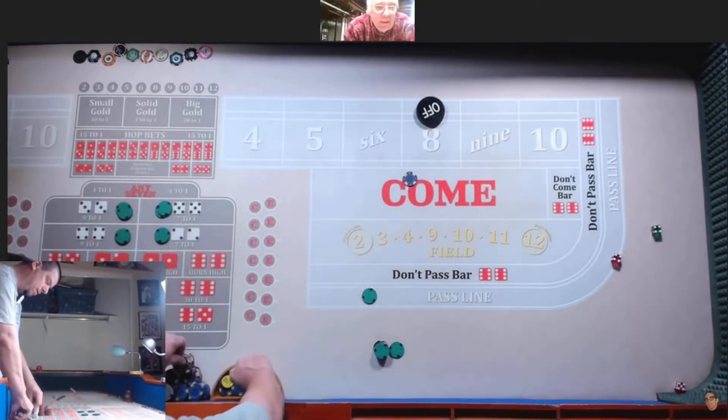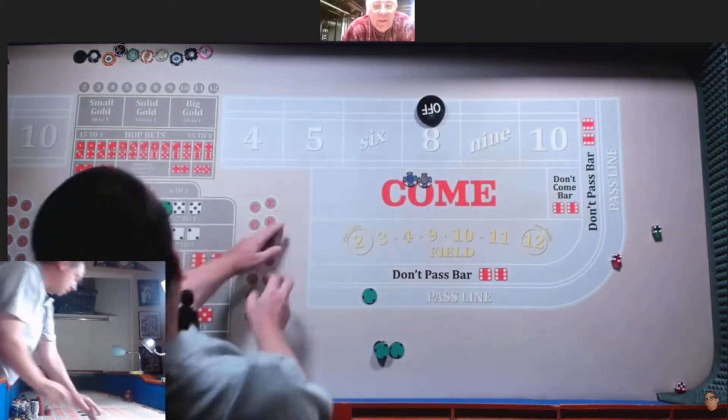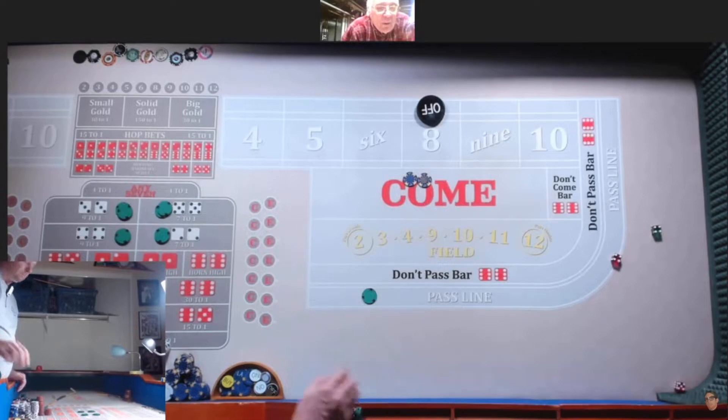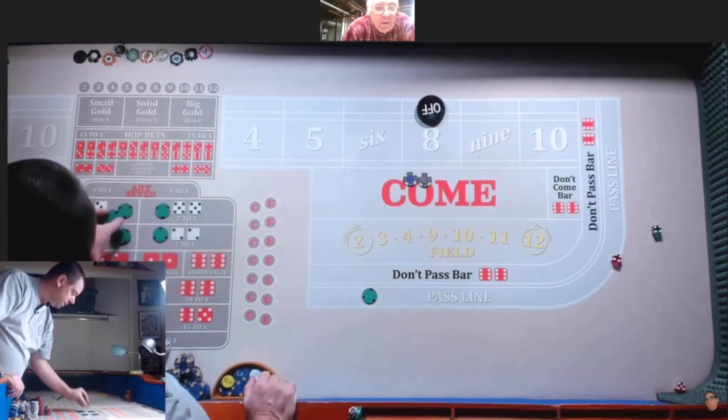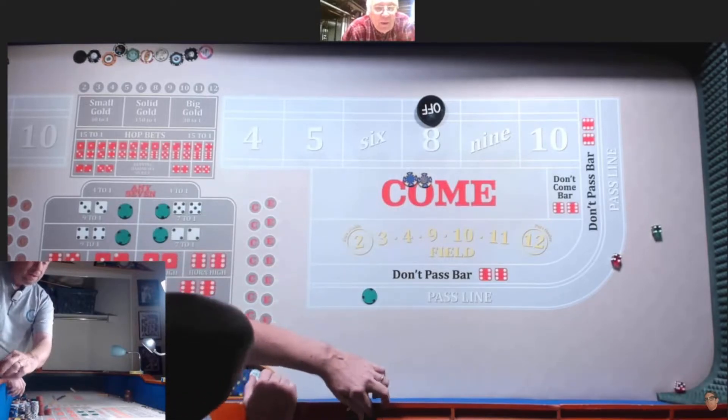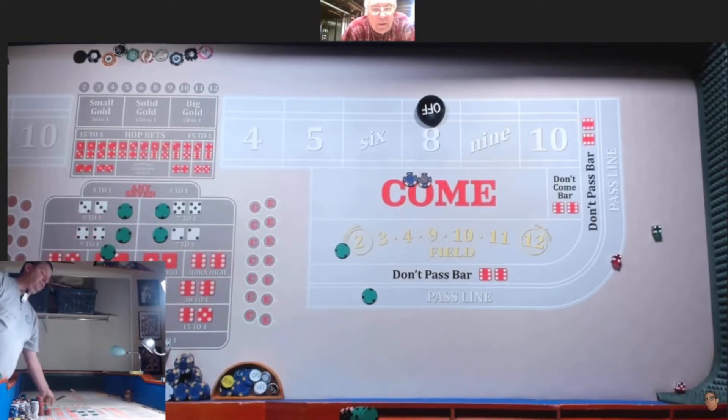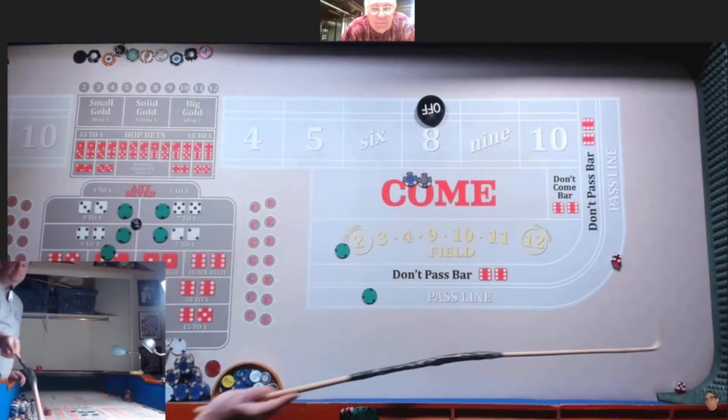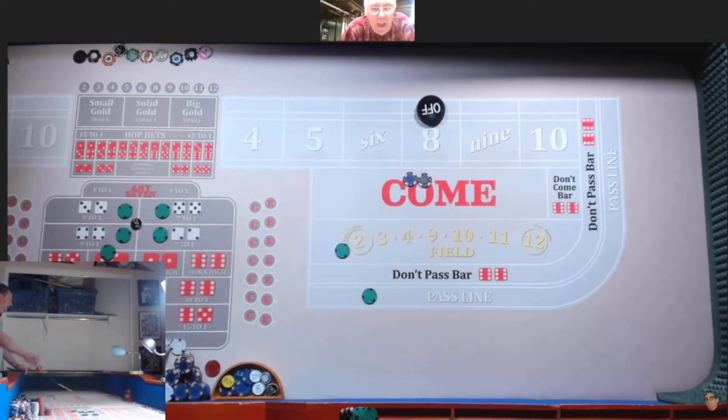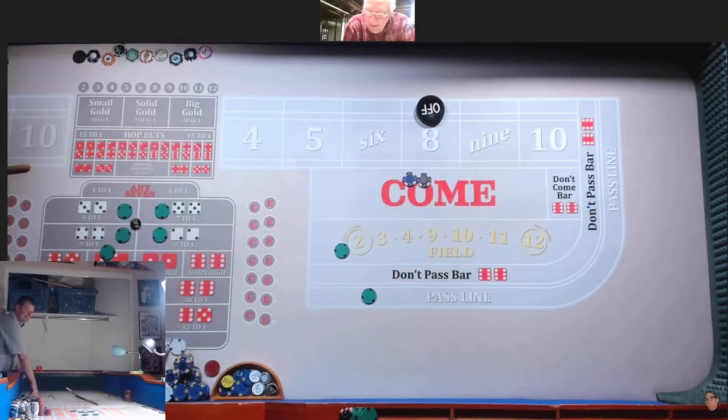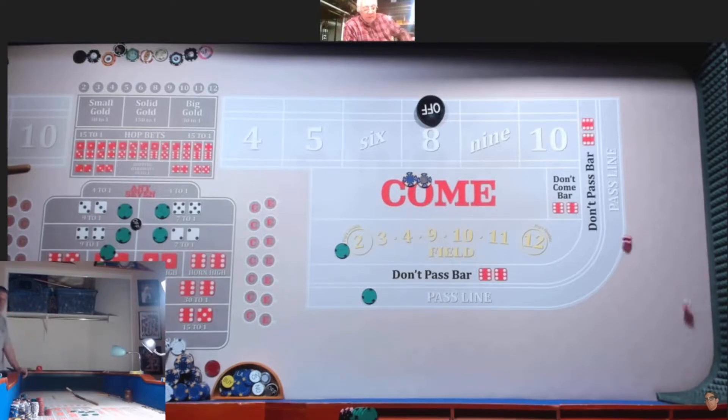Come out roll. All right. Bring my hard ways down to a quarter each. Put a quarter on the field and a quarter on the point-high ace-deuce. Are you working your hard ways? No. Okay. How do you want me to throw them? Let's try it at six, four, three, five. I'm almost ready to let you pick your own. We got a hard four. Okay, that works.